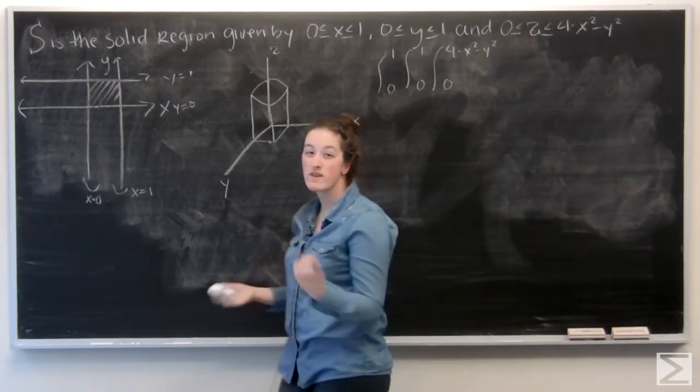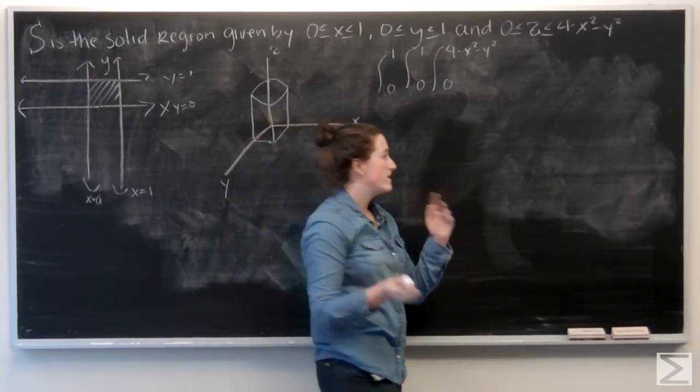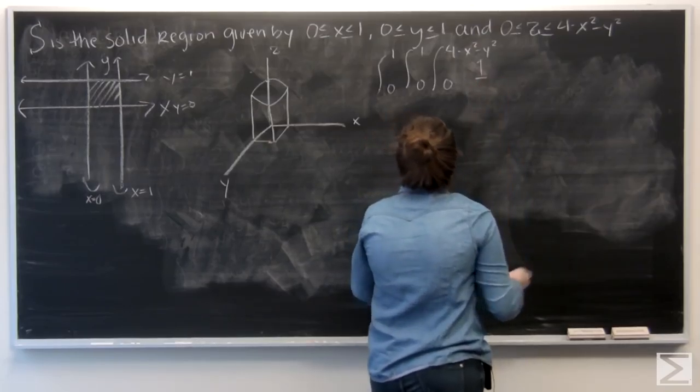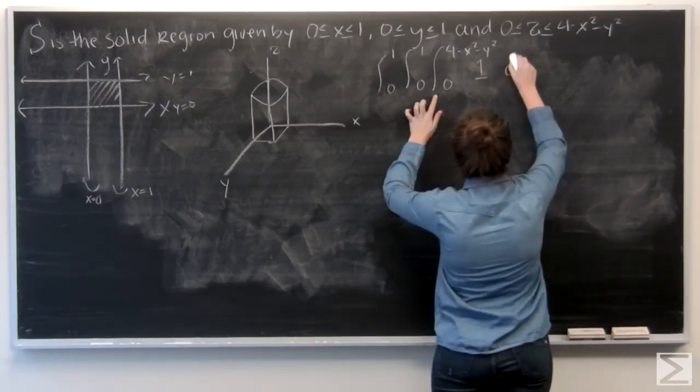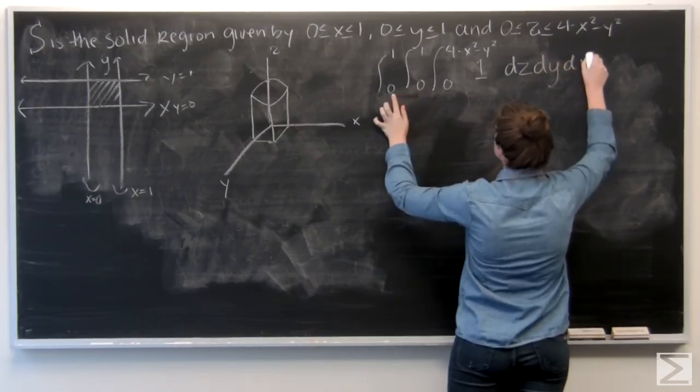And we want to find its volume. So we're just going to integrate 1, or dv. I'm going to throw in a 1, so it's easier to look at. And then dz, dy, dx.